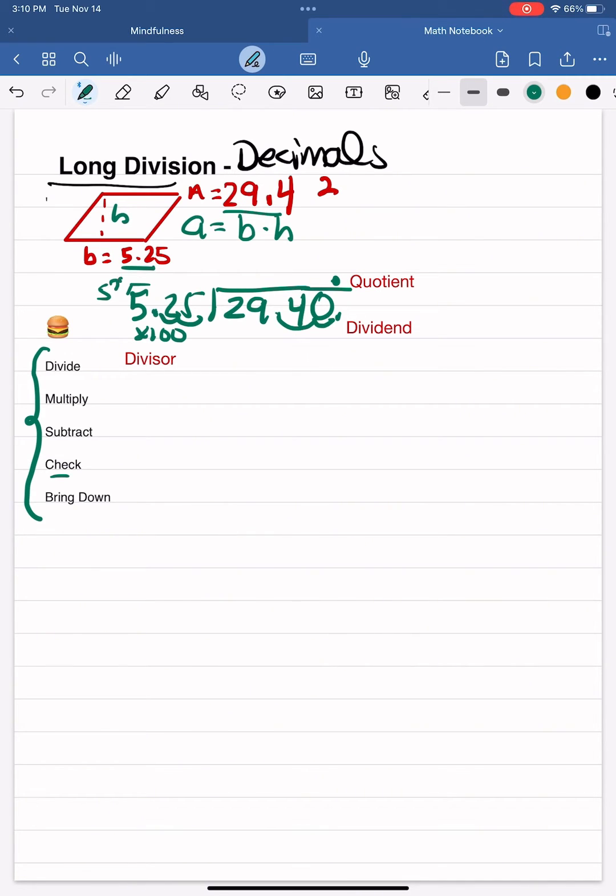Divide, multiply, subtract, check, and bring down. I can fit about 5 groups of 525 into 2,940.